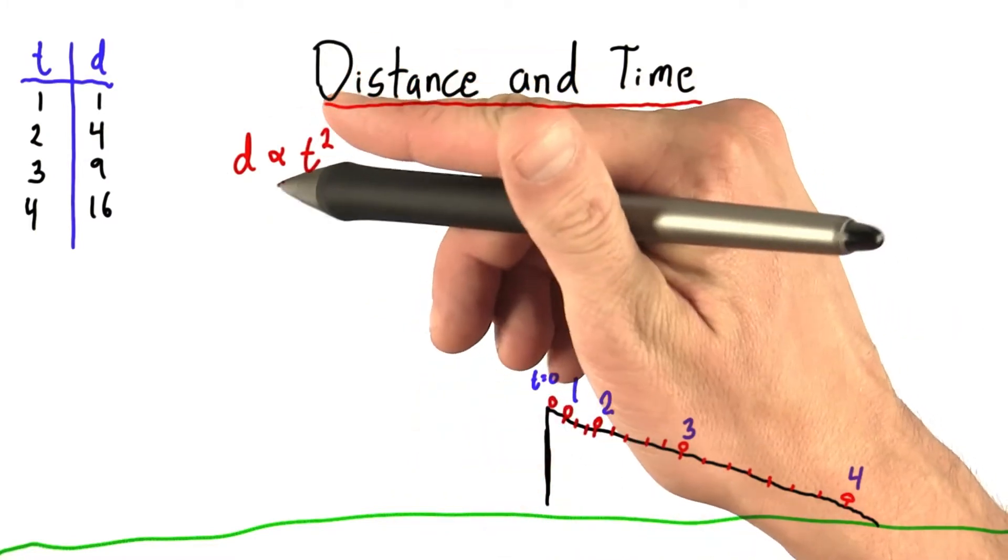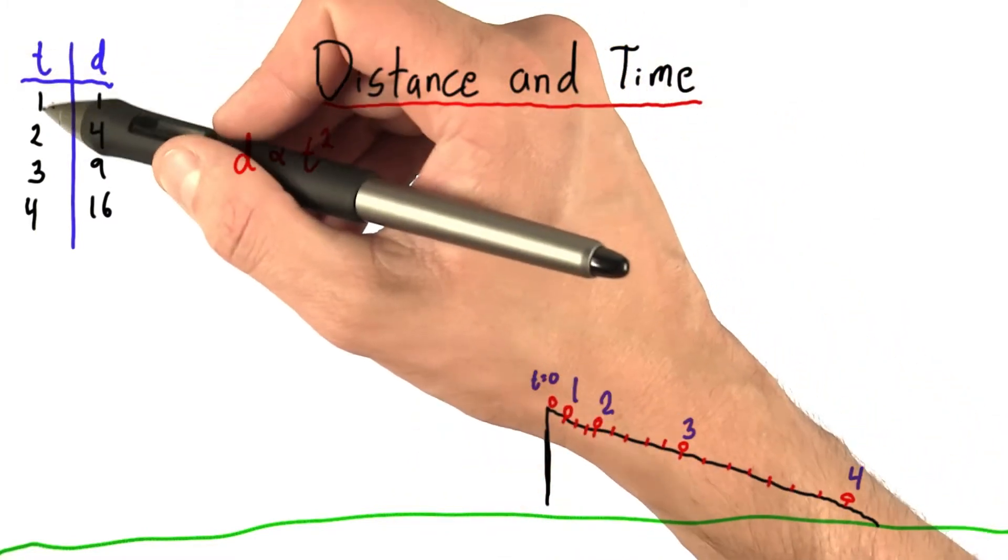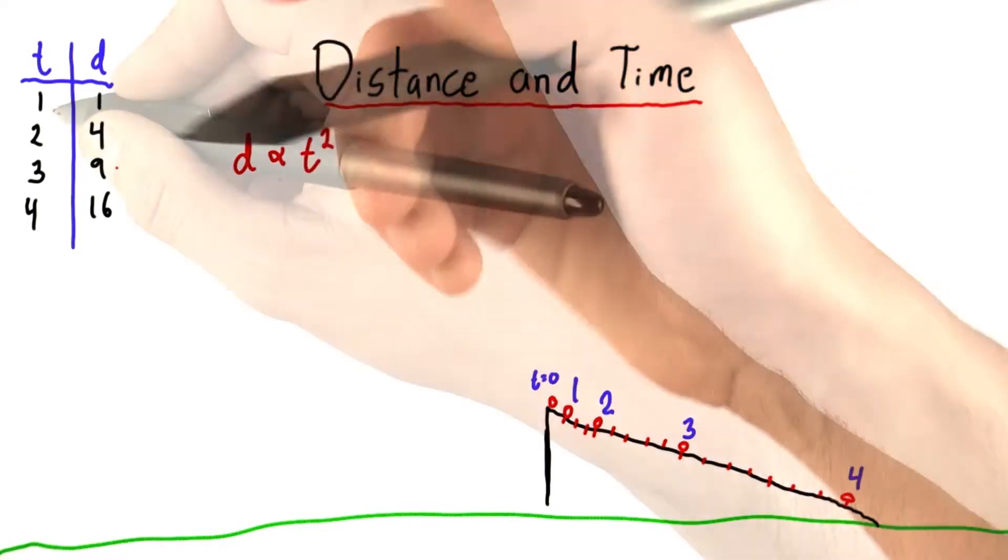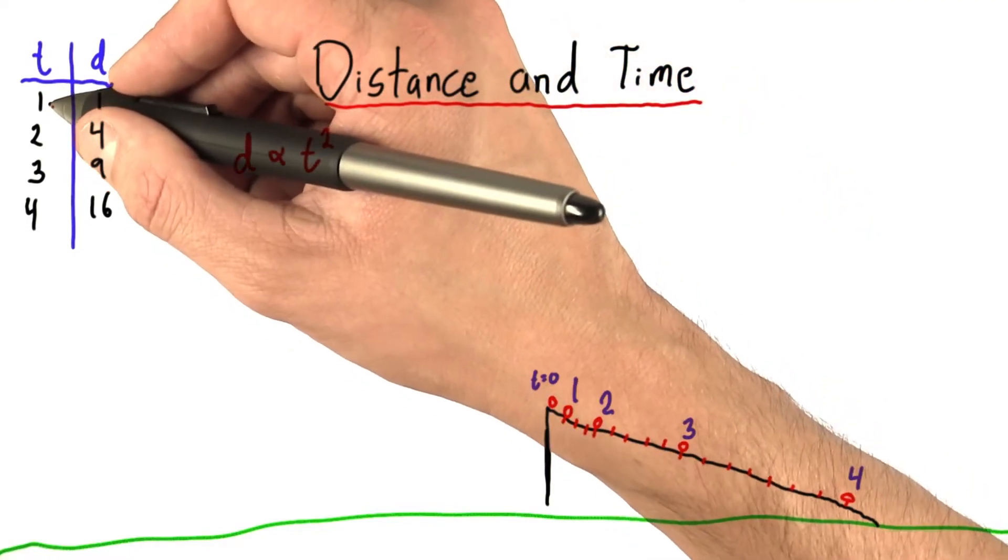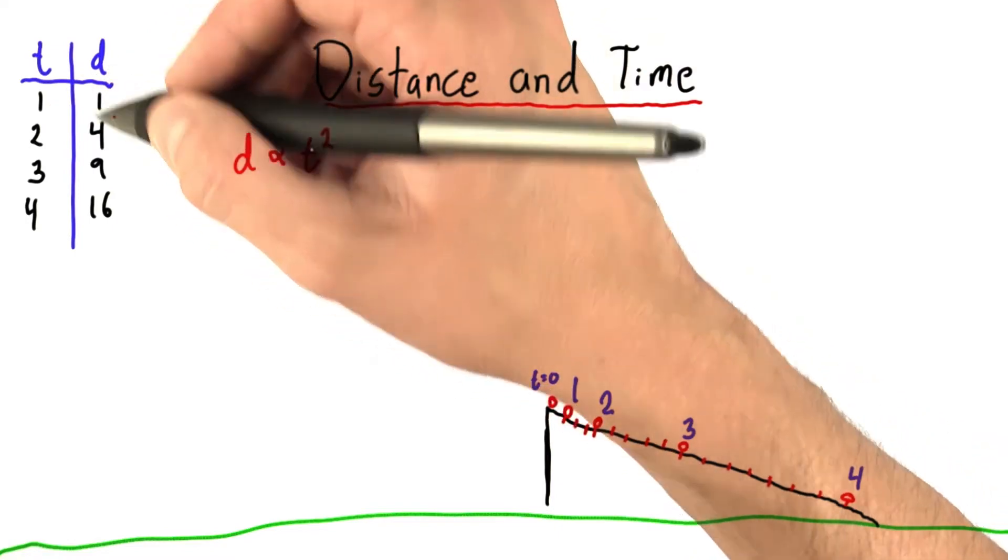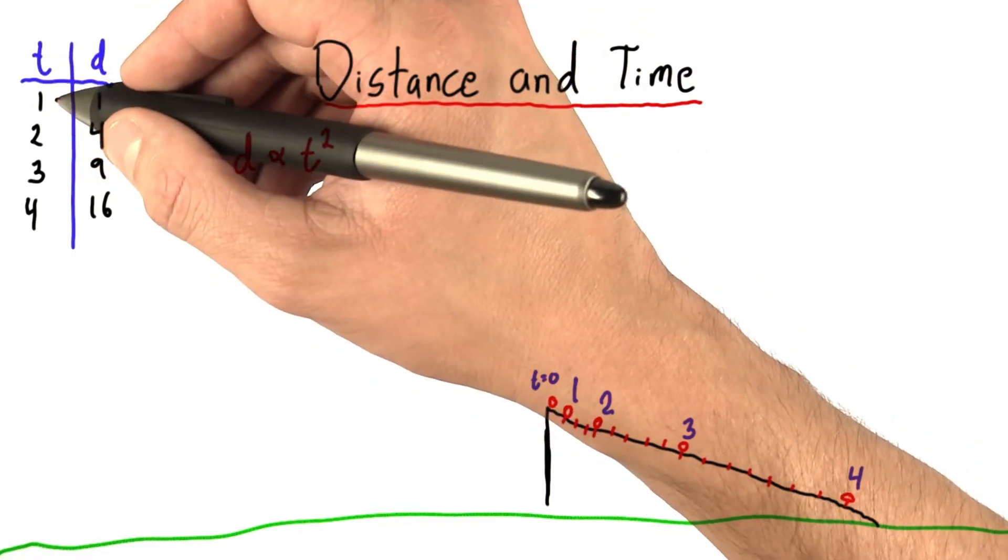I say proportional to and not equals because, remember, we don't know the units of time or distance, in fact. Time was measured by allowing water to flow and then weighing the resulting water. And one distance unit was just defined as the distance a ball rolled in one time unit.